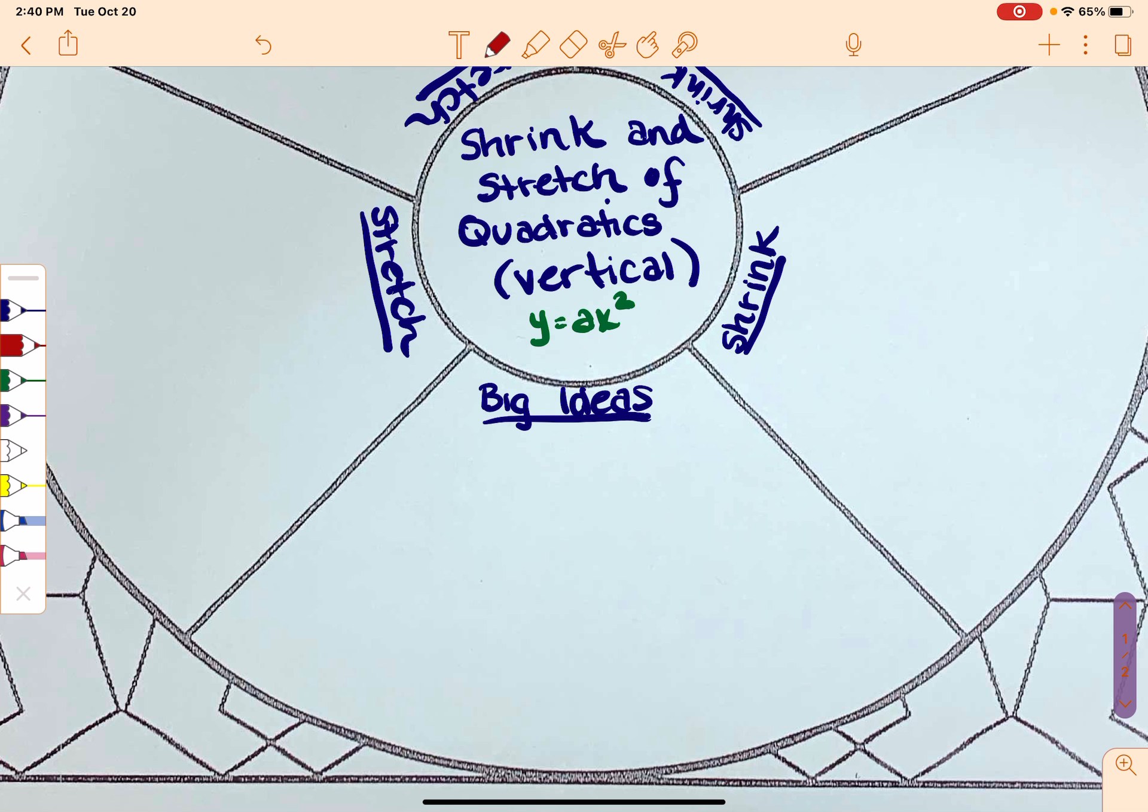So here's kind of some big ideas. First of all, on this section, we are only going to worry about vertical changes. Only about vertical changes in this section. And everything that we do is going to be compared to y equals x squared or y equals negative x squared. So it's going to get compared to the parent function, and that's kind of what we're going to worry about.